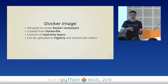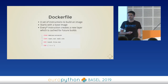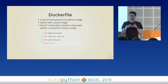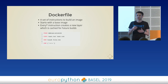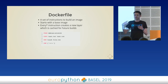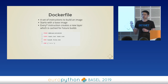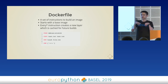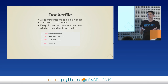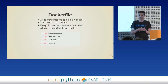We can upload the image to the registry and share it with others. A Dockerfile is a set of instructions to build an image. You start with the base image from which you are going to inherit, and then every instruction does something and creates a new layer, which is cached for future builds. In this example, I inherit from a Debian image, copy a file from my host system to the image, run some command inside the image, and define the default command when starting the container.